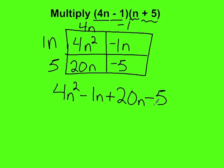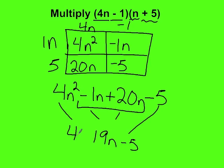Now combine like terms. Negative 1n plus 20n gives us 19n. Nothing to combine the negative 5 with. Nothing to combine the 4n squared with. So we have 4n squared plus 19n minus 5. And that is the table method.